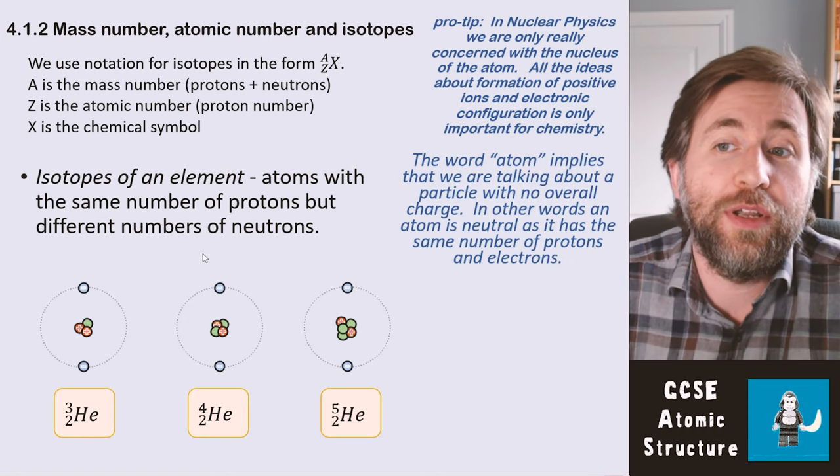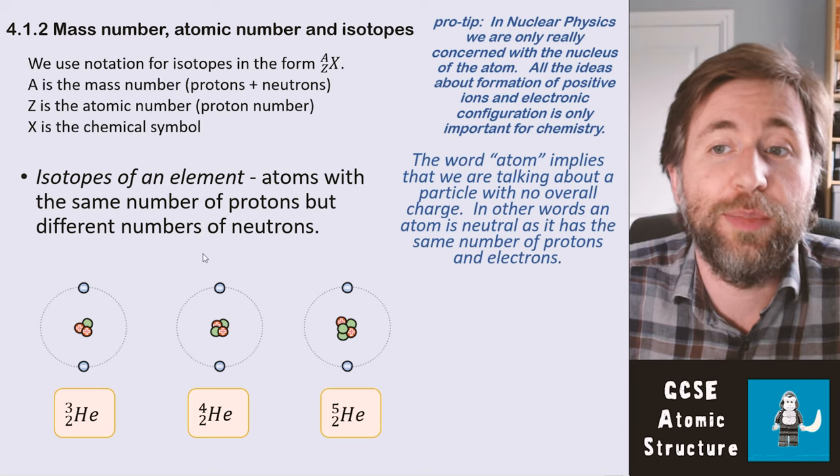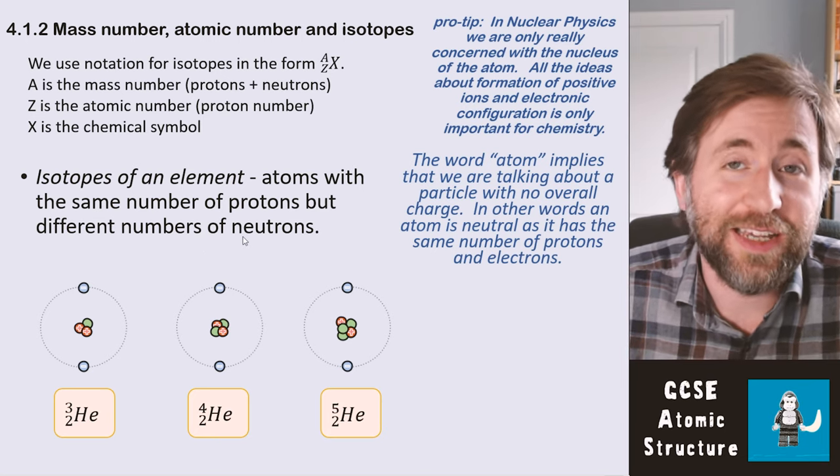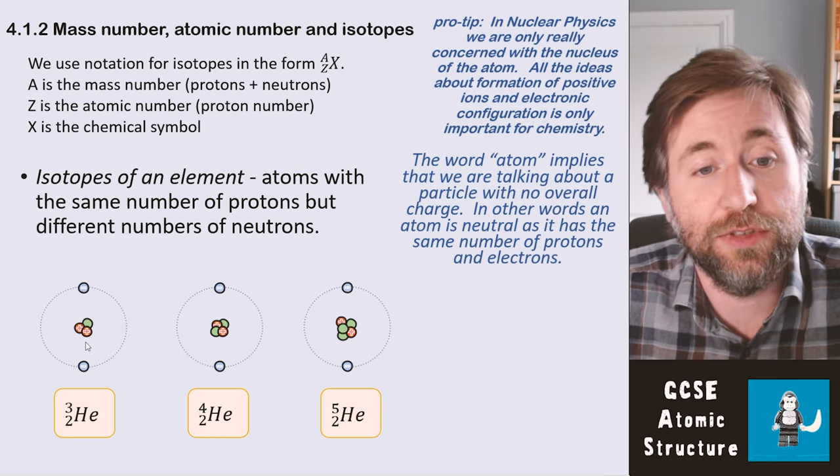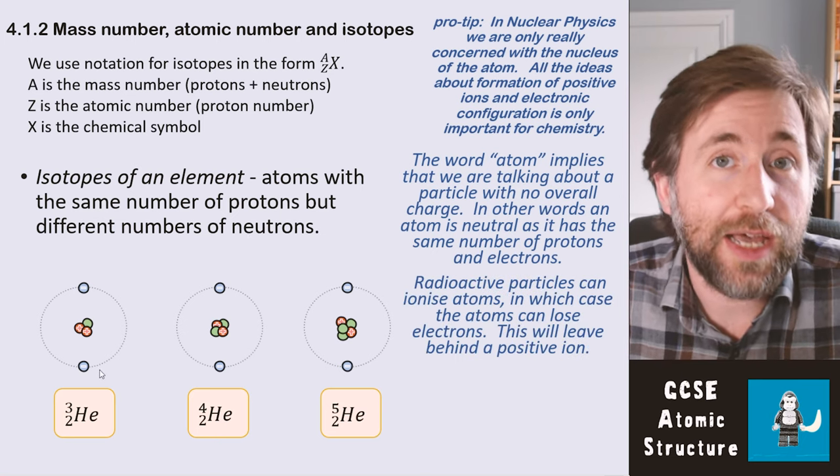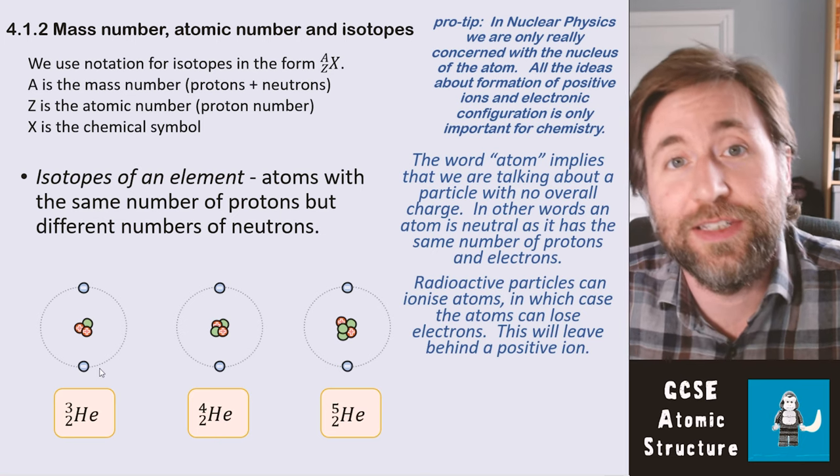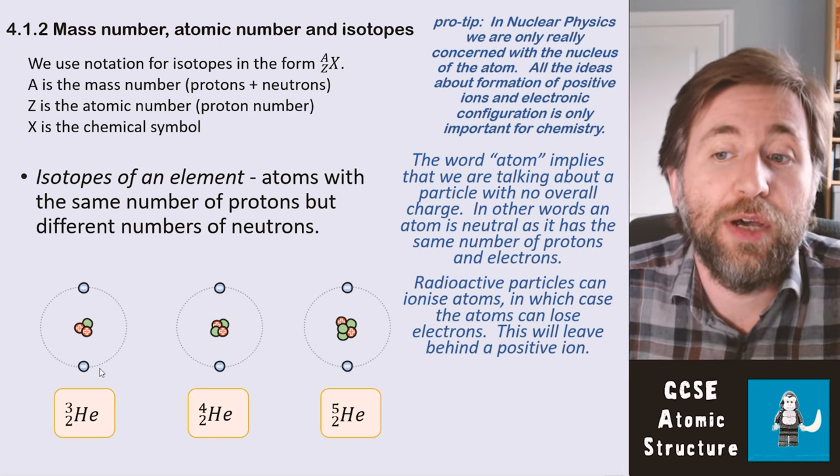That being said, the word 'atom' actually implies that we're talking about a neutral particle, a particle with no overall charge. In that case, it would have the same number of electrons as protons. When radiations hit particles, they can lose or gain electrons. They can become ionized.